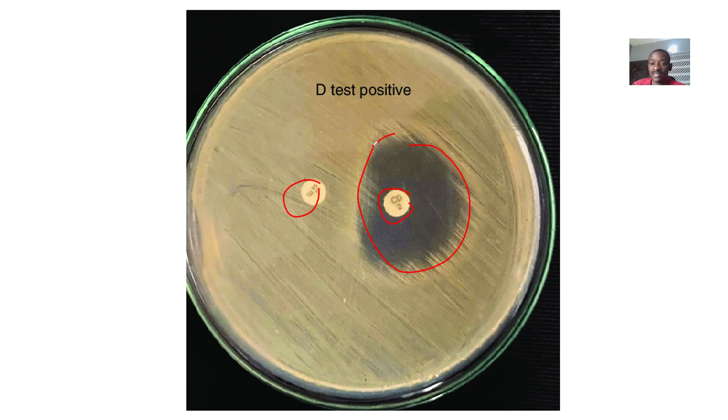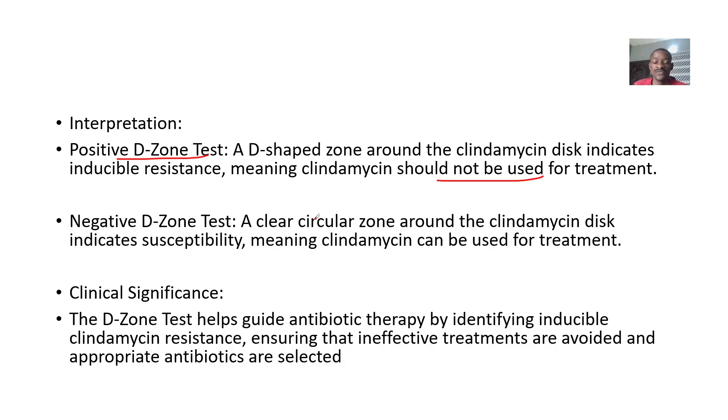This one shows that it is positive. Can you see a D-shaped? That's what they call D. If it is negative, you see a clear zone around the clindamycin disk, meaning the bacteria can be killed by clindamycin.